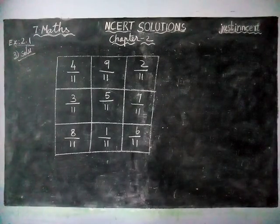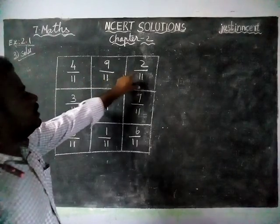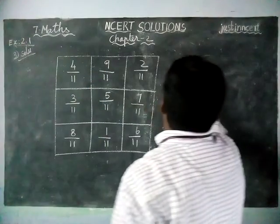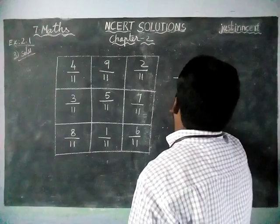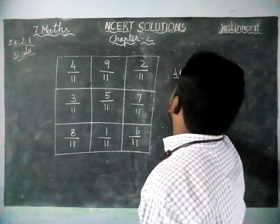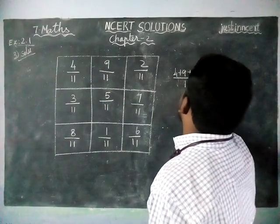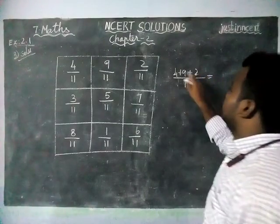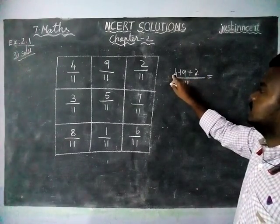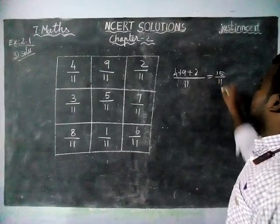Now we are going to check it. Since all the denominators are the same, we can use the common denominator 11. 4 plus 9 plus 2: 9 plus 2 is equal to 11, 11 plus 4 is equal to 15 by 11.